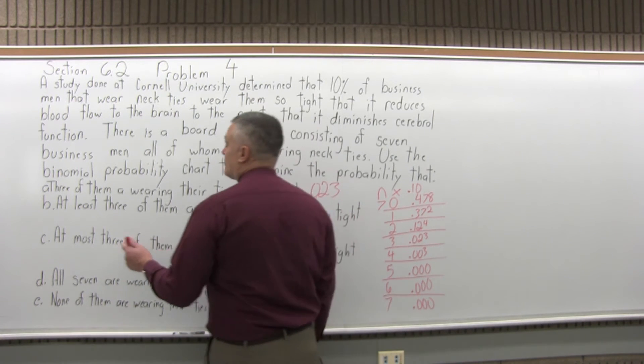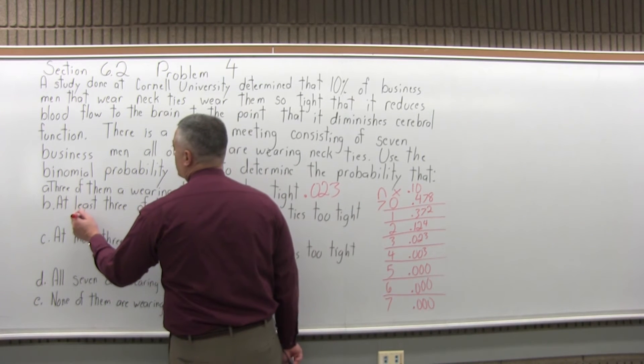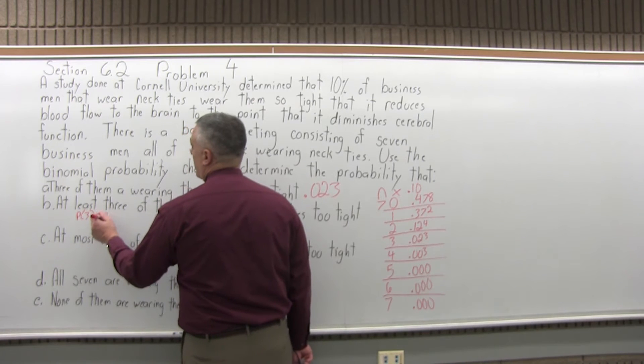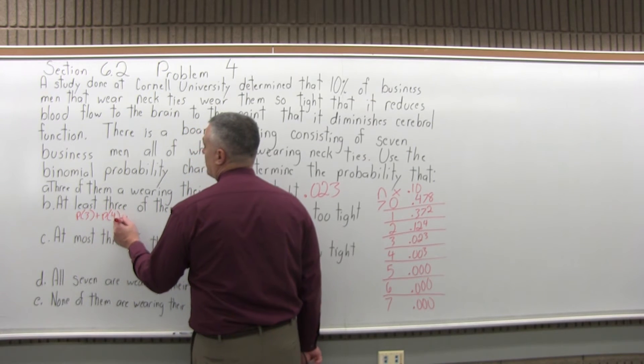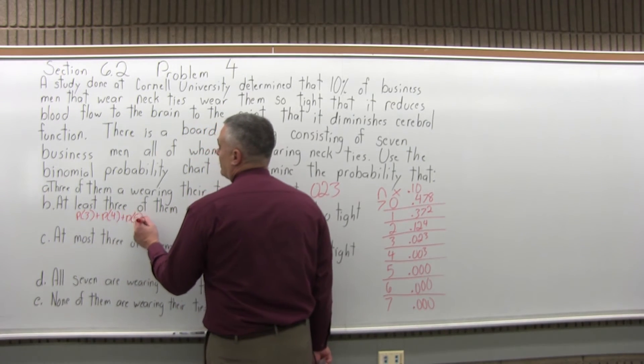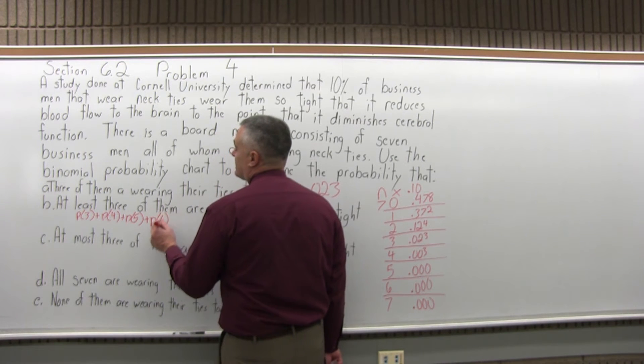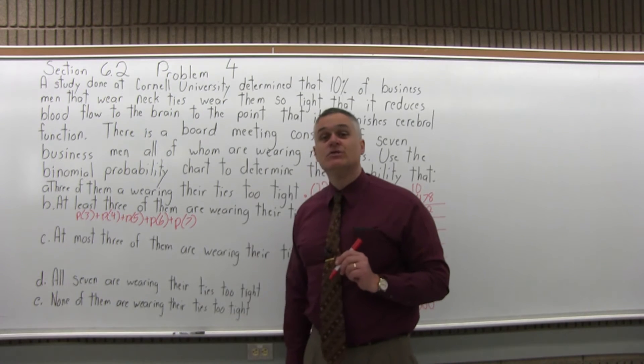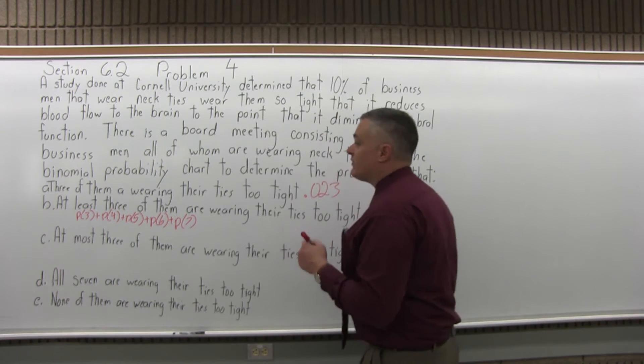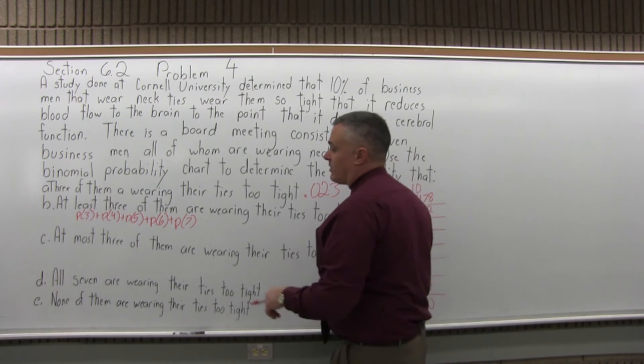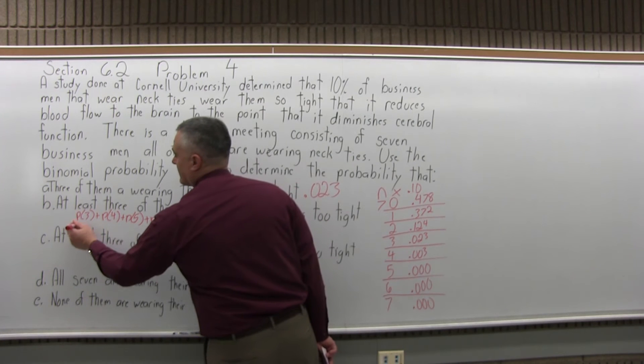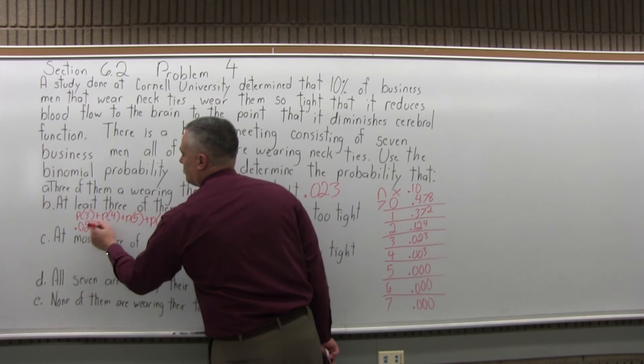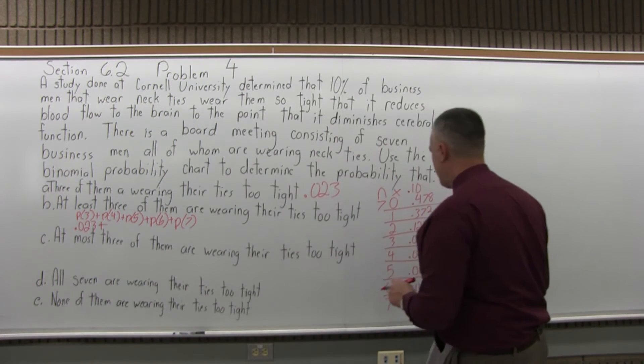For at least three, three is the least. It's three or more. It's the probability for three plus the probability for four plus the probability for five plus the probability for six plus the probability that all seven have their ties on too tight. For three, we know from part A is .023, plus for four, I'll go back to the chart, for four it's .003.